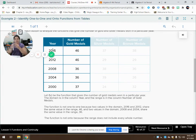But in one-to-one, if you have two inputs, two different inputs, like 2016, 2012, that are paired with the same output, then it is not one-to-one. Because 2016 goes to 46 and 2012 goes to 46. They both go to 46, so that is not one-to-one.